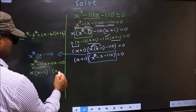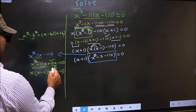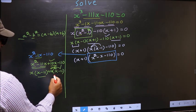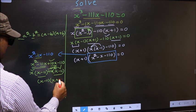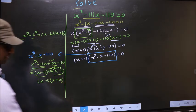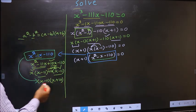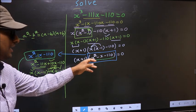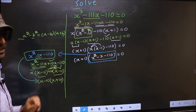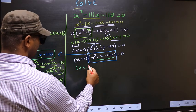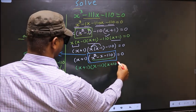Whatever you got here, here also you get the same thing. From this, x gone inside, outside you get +10. Now take out (x - 11) common, so here you have x and here +10. In place of this quadratic we write (x - 11)(x + 10). So this equation changes to: (x + 1)(x - 11)(x + 10) = 0.